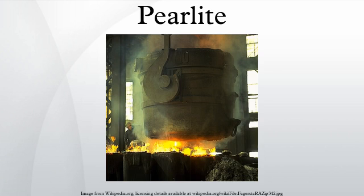Pearlite is a two-phased, lamellar structure composed of alternating layers of ferrite and cementite that occurs in some steels and cast irons. The lamellar appearance is misleading since the individual lamellae within a colony are connected in three dimensions. A single colony is therefore an interpenetrating bi-crystal of ferrite and cementite.